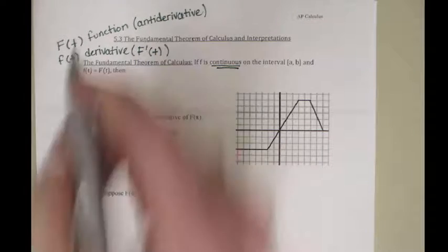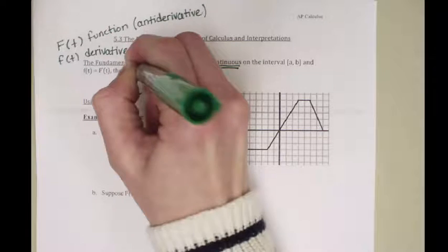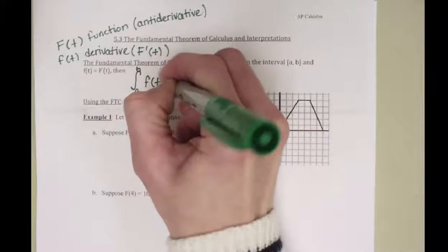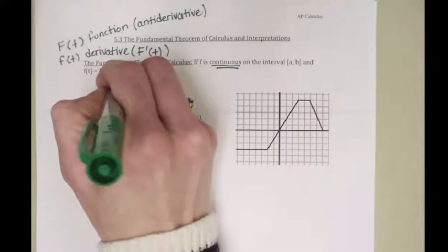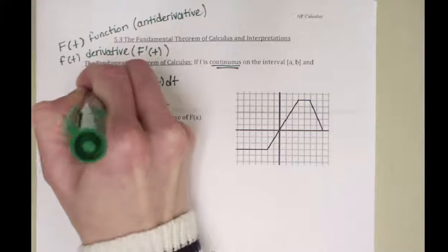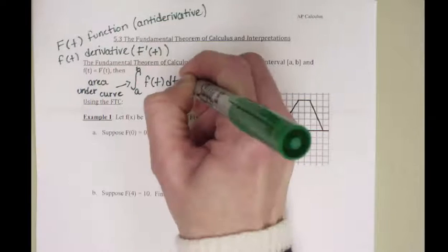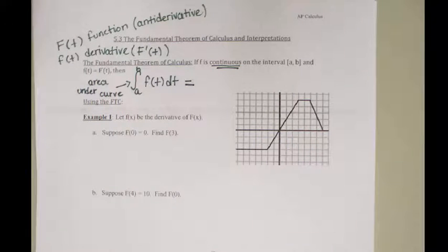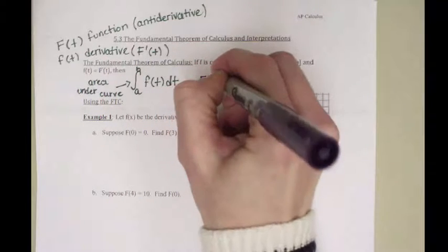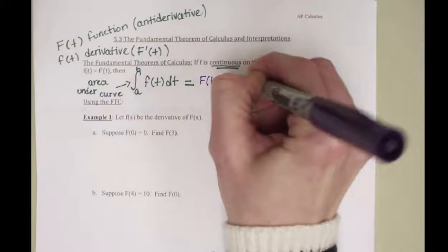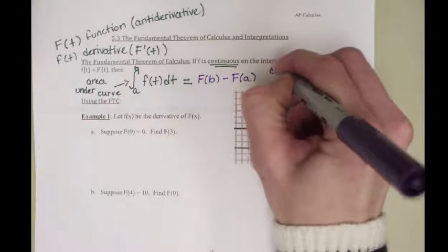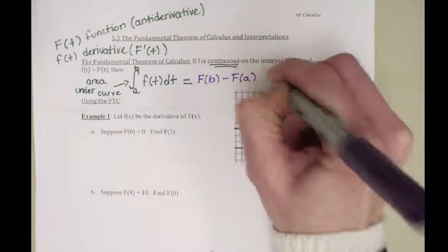So the fundamental theorem tells us if you take an integral from a to b of the lowercase — the derivative function — an integral is basically the way you find the area under the curve. On the function graph, that's equal to the function value at b minus the function value at a. So the area under the derivative curve is equal to the change in y values in the original function.